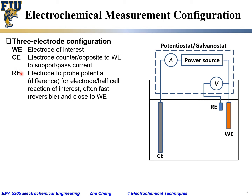RE stands for reference electrode — that is the electrode inserted into the system to probe or measure the potential difference for the electrode or half-cell reaction of interest. It is placed near the working electrode. We want the reference electrode to undergo a reversible reaction, which means the overpotential through it would be very small, negligible.